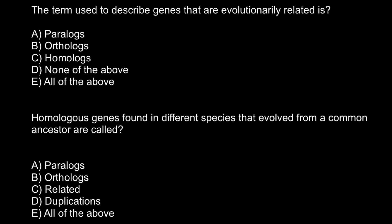Hello and welcome to Nikolai's genetics lessons. In this video I'm going to talk about population genetics. Here's the first question: the term used to describe genes that are evolutionarily related is — and we have to choose between answer A: Paralogs, B: Orthologs, and answer C: Homologs. It looks like all these terms are very related and describe things that are very close in terminology.